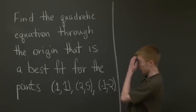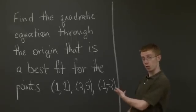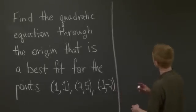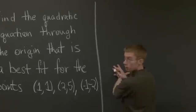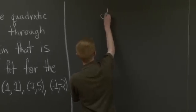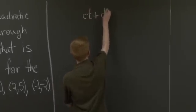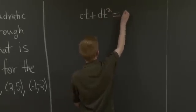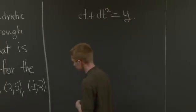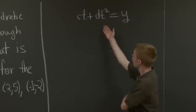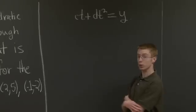So what's the first step in a problem like this? The first step is figuring out what our equation looks like, the one that we're going to find. So our equation is going to look like ct + dt² = y. So that's what we're looking for. We're looking for a quadratic equation through the origin.